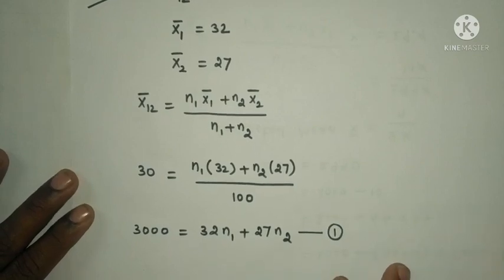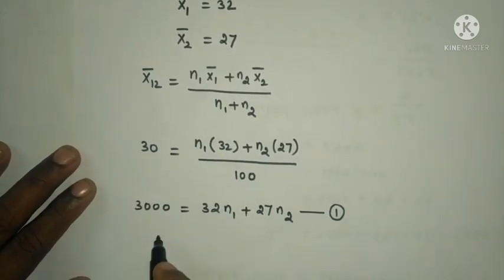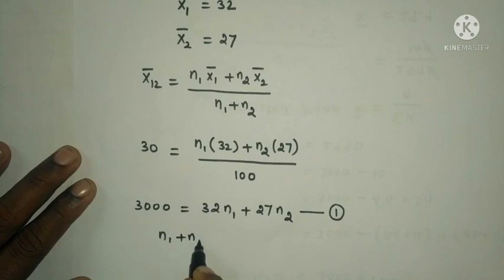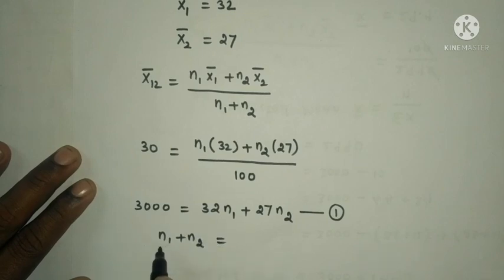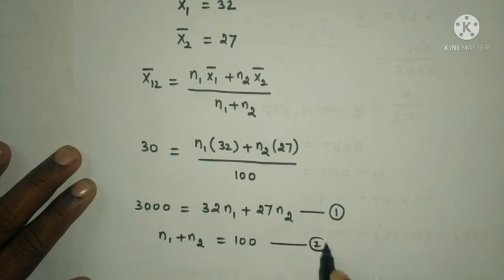Also, n₁ + n₂ = 100. This is equation number 2.